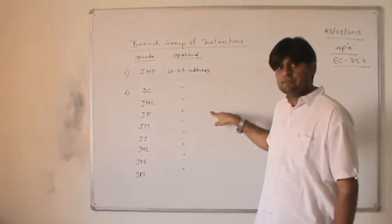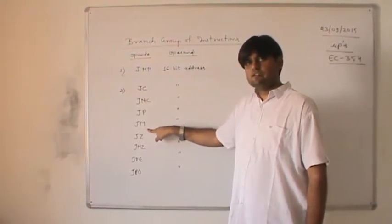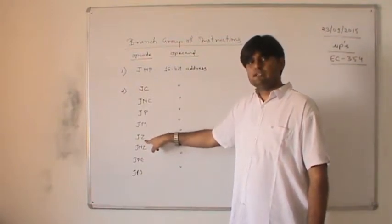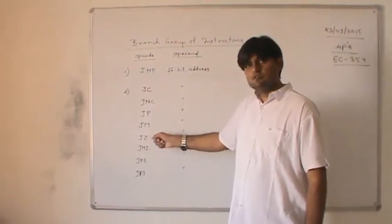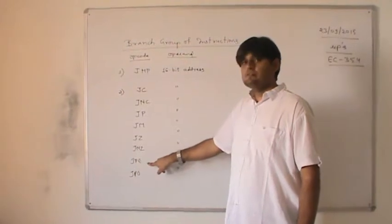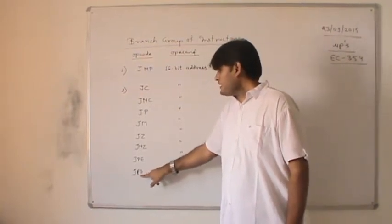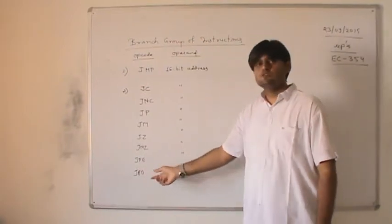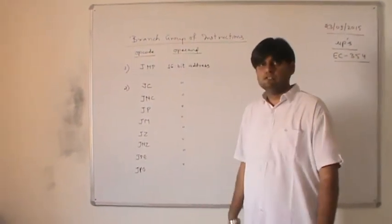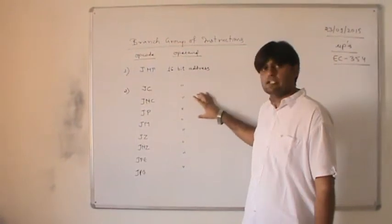JP checks the sign flag — if the sign flag is zero, it will jump. JM checks the sign flag too — if it is set, it will jump. JZ checks the zero flag — if zero flag is set, it will jump. JNZ is opposite to JZ — if zero flag is not set (Z=0), it will jump. JPE jumps if parity flag is set, and JPO is opposite to JPE — if parity is odd (P=0), it will jump to the memory location in the operand field. These are all the unconditional and conditional jump instructions.